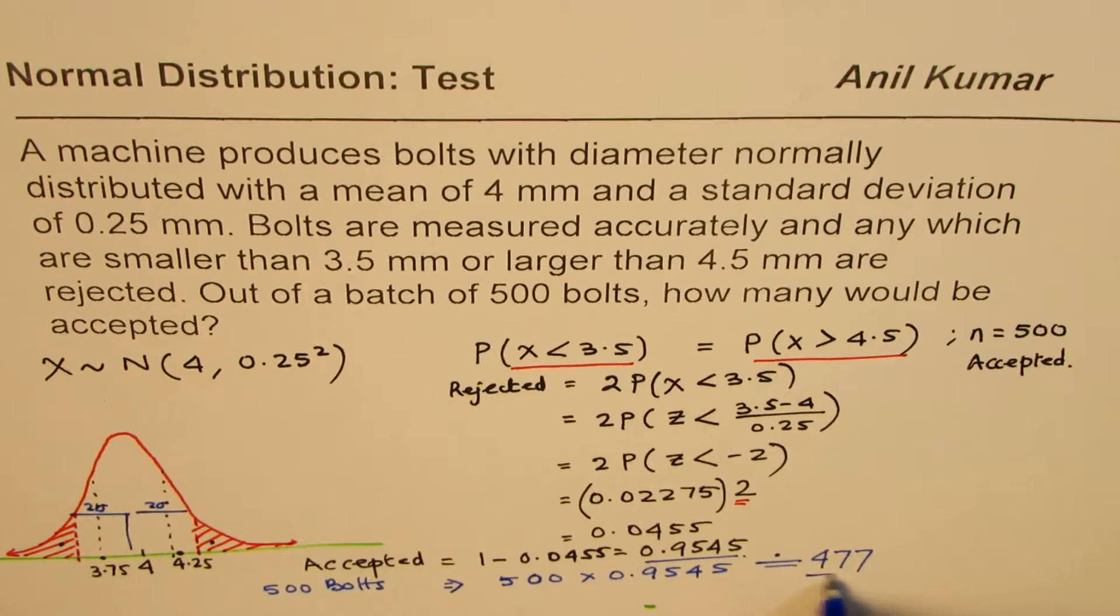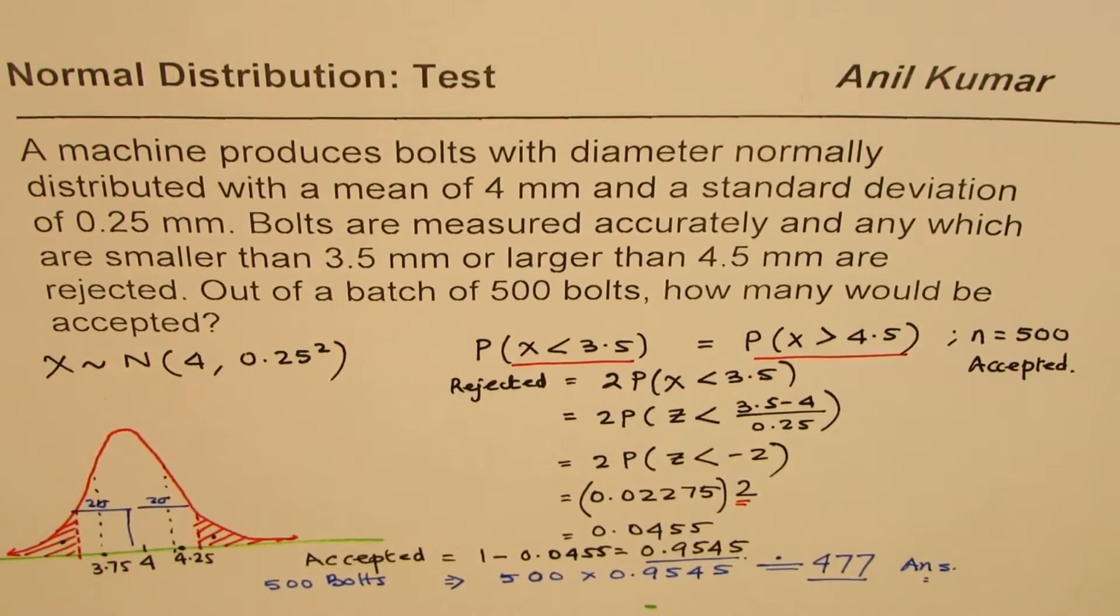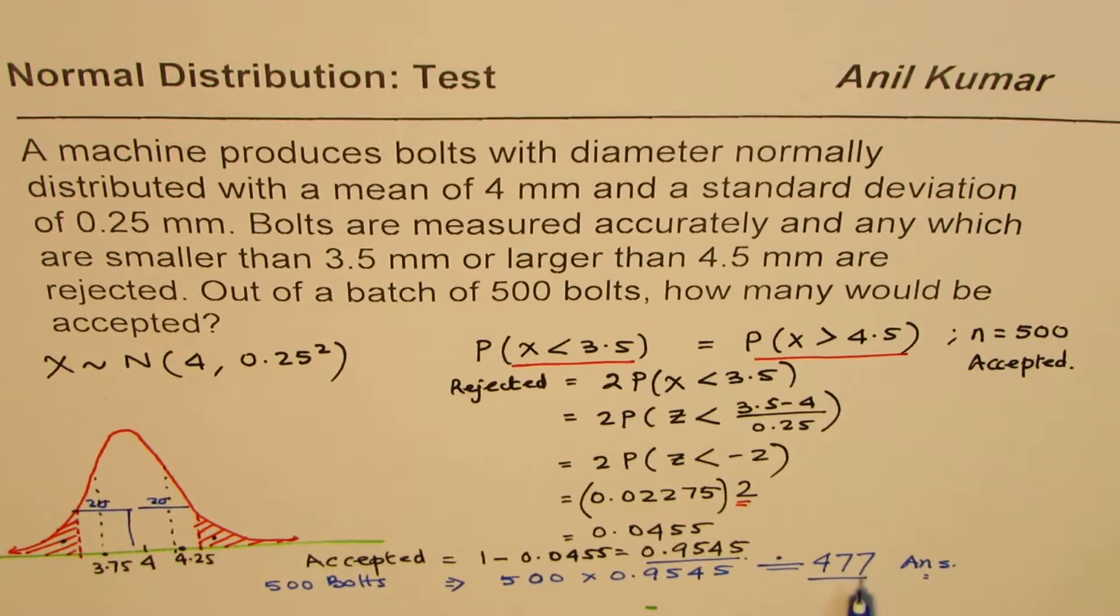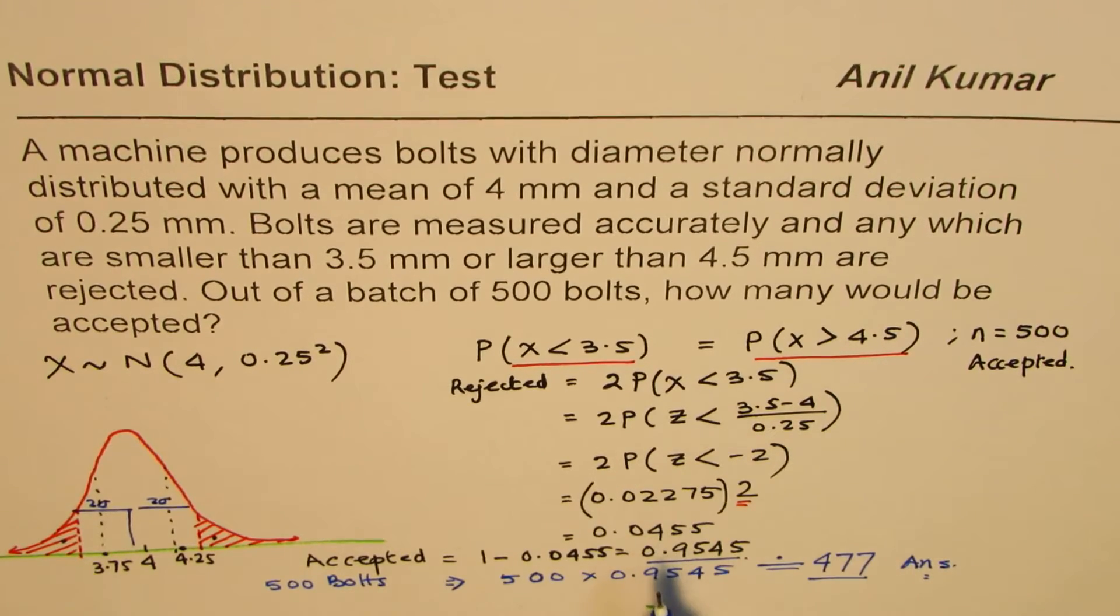Total number of bolts which are accepted will be 477. I'm Anil Kumar and I hope you understand the concepts. So in this particular case we first understood the situation by making a small sketch, that is important. From the sketch itself it's kind of clear that we are going to get around 95 percent as our solution because those two points are 2 sigma away.